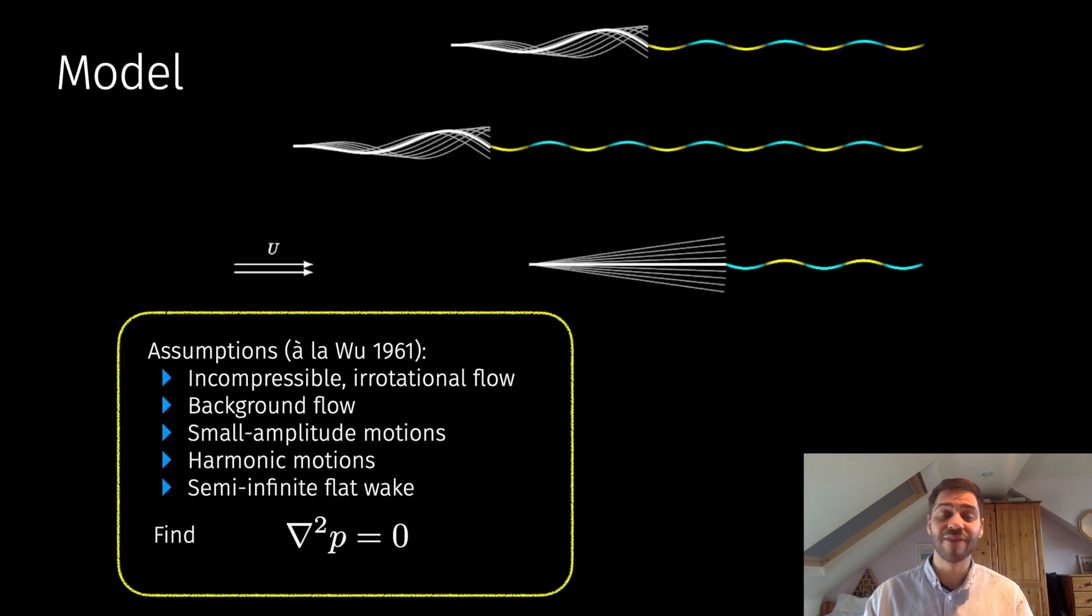I'll now outline the various assumptions that we make in our model. Our model is very inspired by that of Wu in his seminal paper Swimming Over Waving Plate. We consider an arbitrary number of swimmers—here there's just three—and we make the thin airfoil assumption, namely that these are executing small amplitude motions.